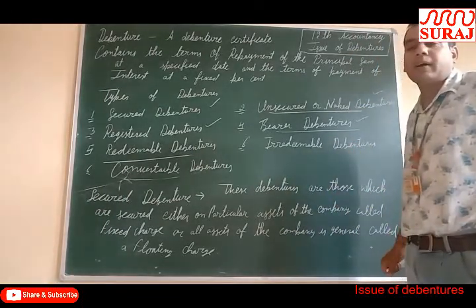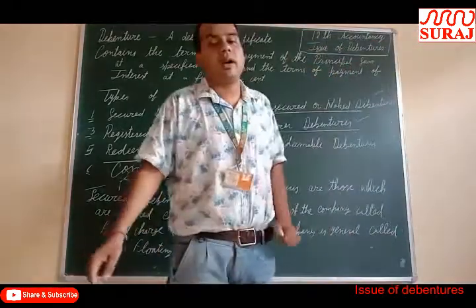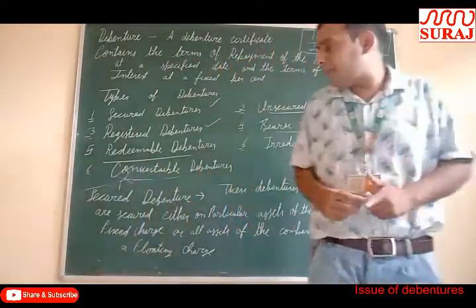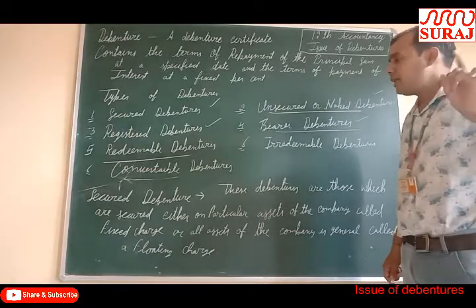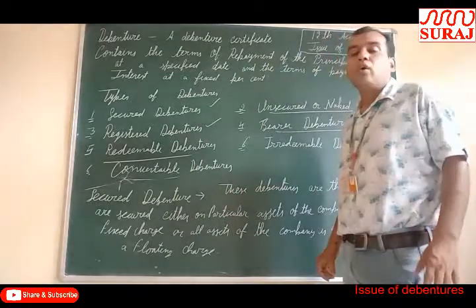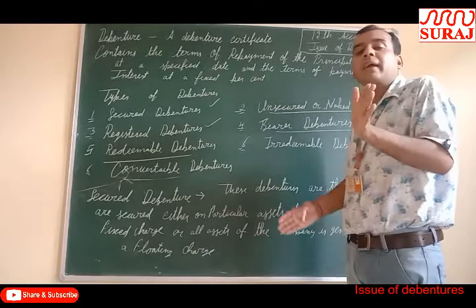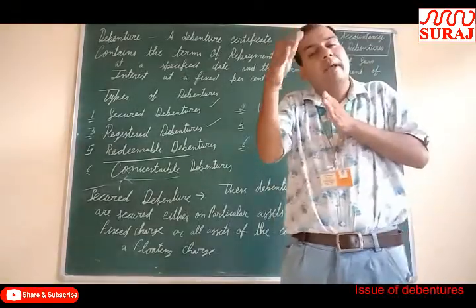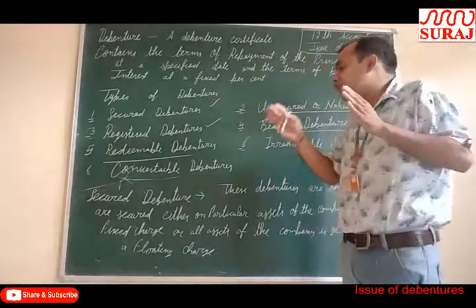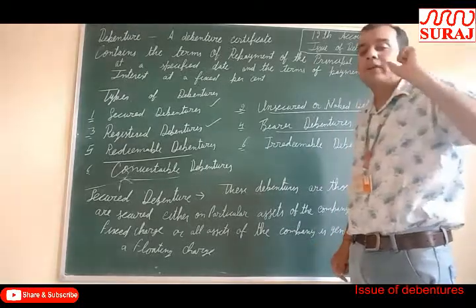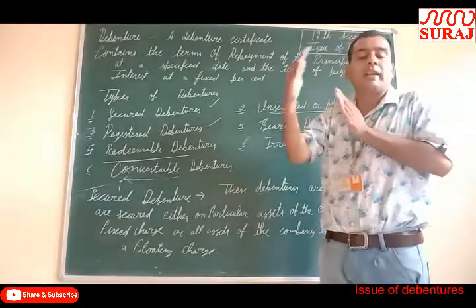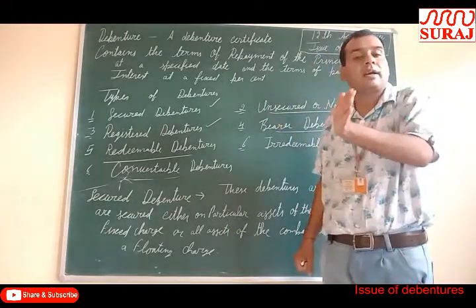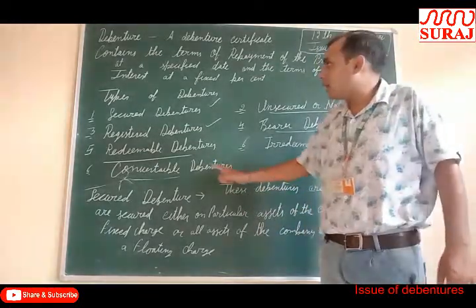Irredeemable debenture. The debenture money will not be refunded by the company during its lifetime — the capital will not be returned to the debenture holder during the company's existence. Next, convertible debenture. Those debentures which carry the right to convert into shares at a fixed time period. The debenture holders have the right to convert their debentures into shares after a particular period — typically 18 months to 36 months after issue.